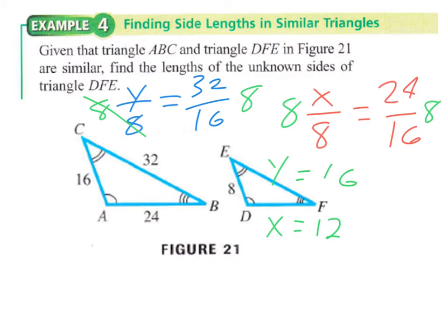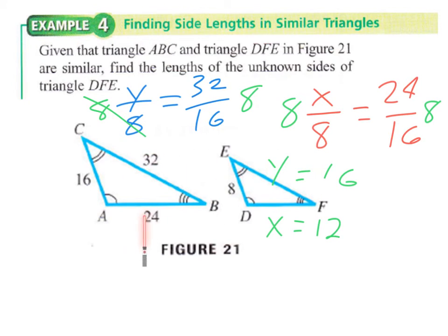These results should seem proportional — the DEF triangle's sides are twice as large as ABC's, so the corresponding sides are half as much: 32 and 16, and 24 and 12. That said, it doesn't always work out this easily, so you need to know how to set up these proportions for when the numbers give fractions or decimals.